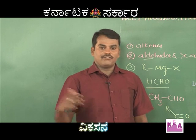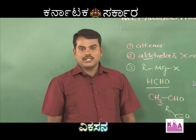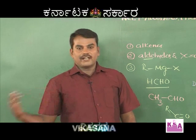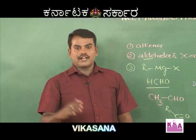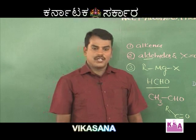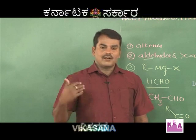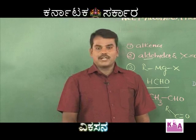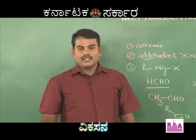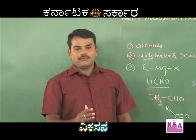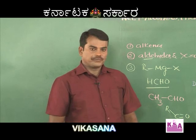Monohydric phenols contain only one OH group. Dihydric phenols contain two OH groups. Trihydric phenols contain three OH groups. Now let us talk about the general methods of preparation of phenols and their manufacture. The first method of manufacture is the cumene process.